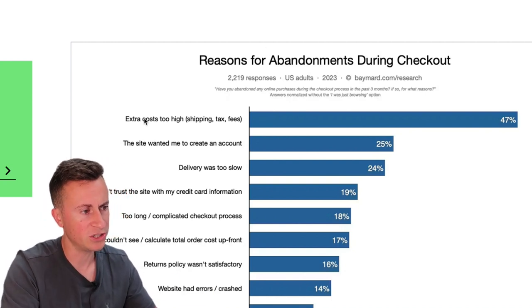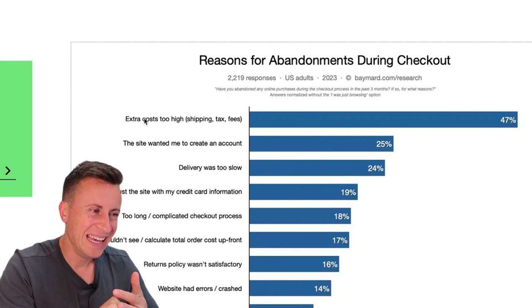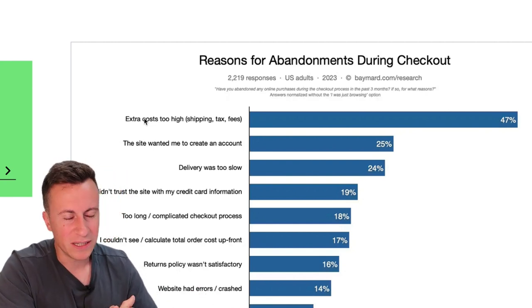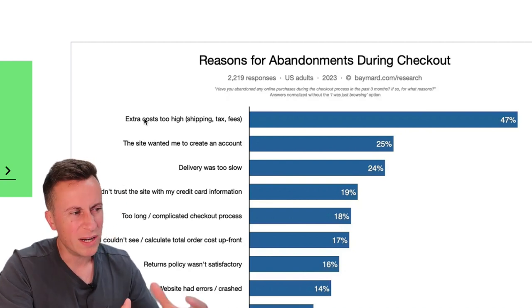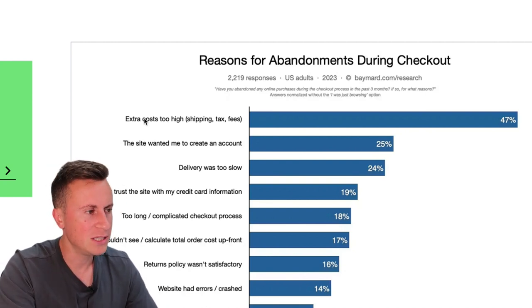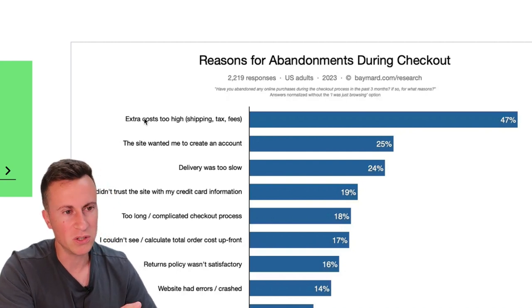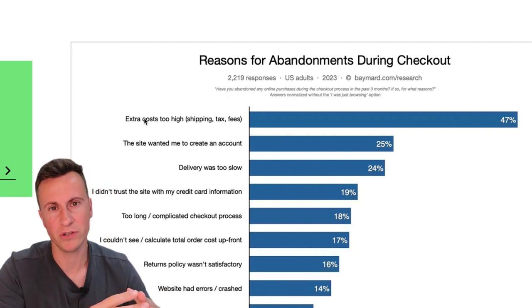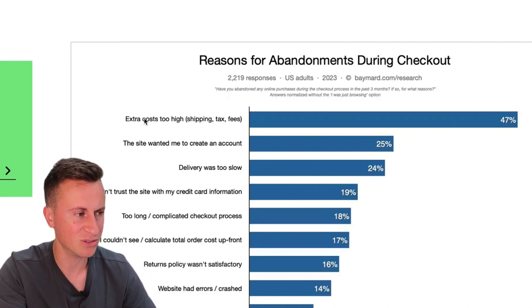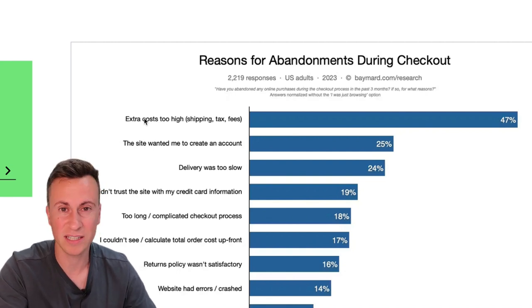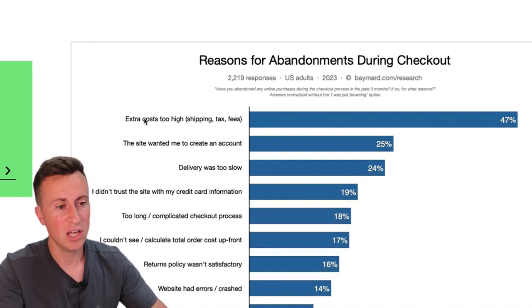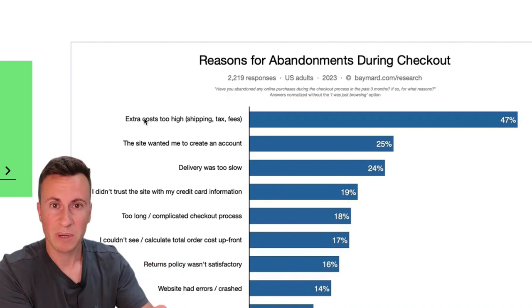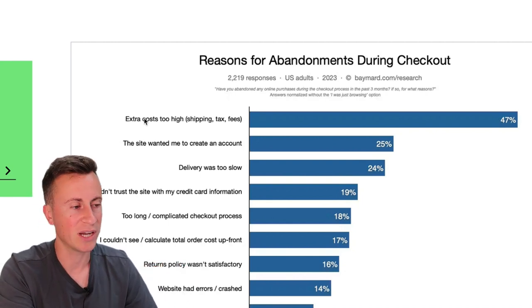Number one: extra costs — high shipping, tax, and fees. Here in the UK, taxes don't really apply in the same way, and in the US taxes vary state to state. On your dropshipping store there should be no mention of taxes at all — it's included in the price. Think about Amazon: you don't know what the tax is, it's built in. The price you see on the product page is the price you pay at checkout.